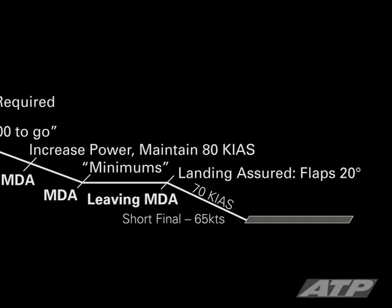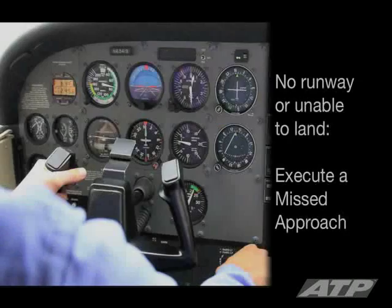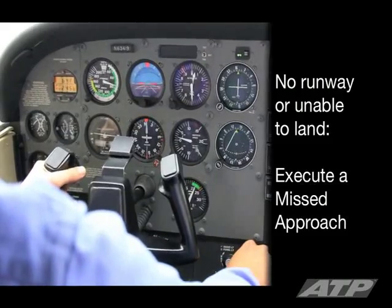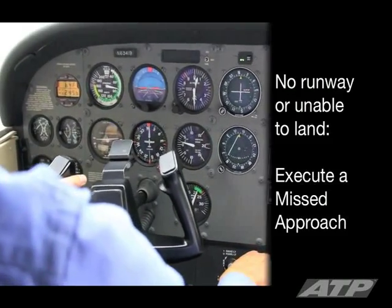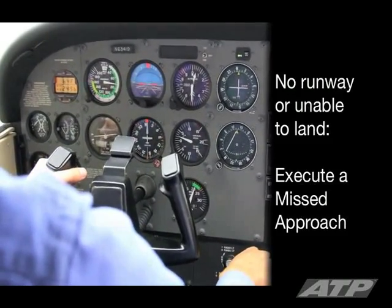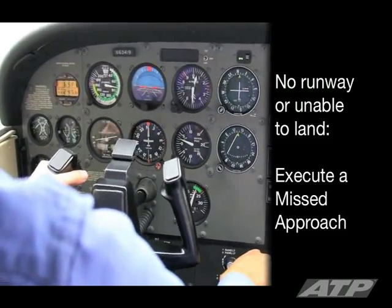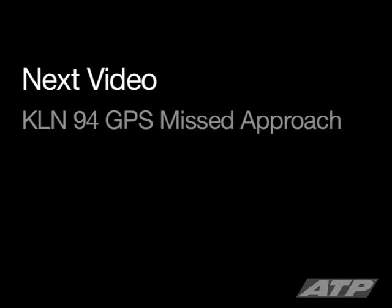At MDA announce 'Minimums'; maintain MDA plus 50 feet, minus 0 feet. Runway in sight: descend at the predetermined VDP or maintain MDA to the missed approach point. Do not leave MDA until landing is assured. When descending from MDA, flaps 20, 70 knots. On short final, slow to 65 knots until 10 to 20 feet above the runway. If no runway in sight or unable to safely descend and land, complete a missed approach. Watch the next video in the series: KLN-94 GPS missed approach.